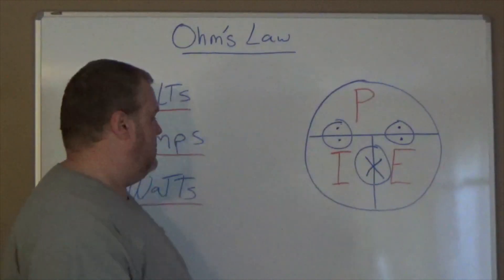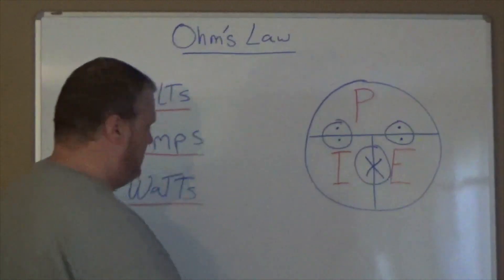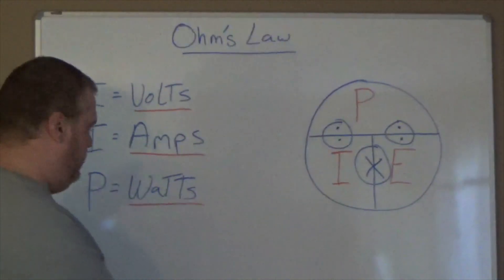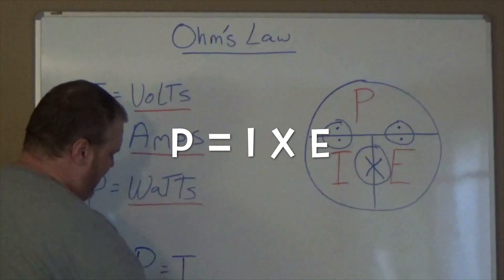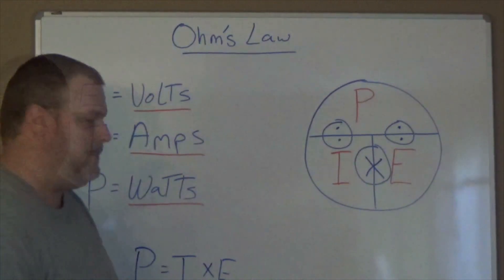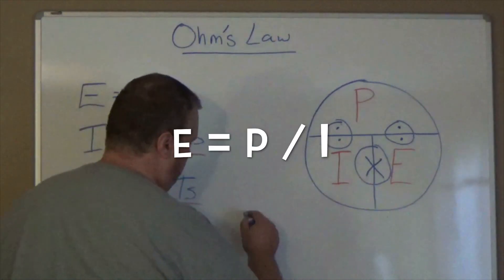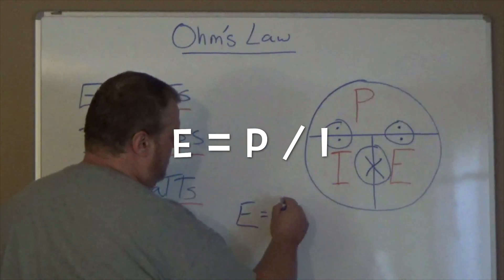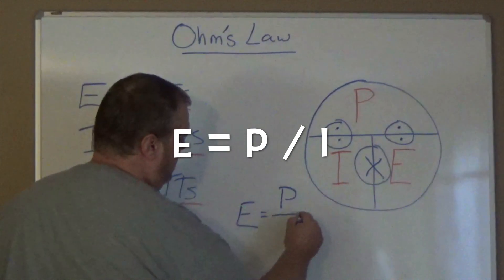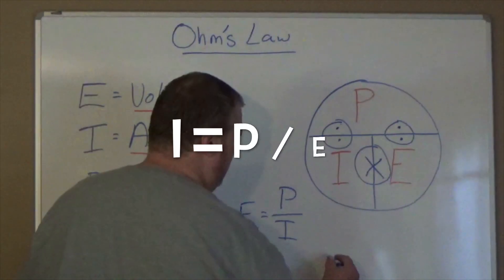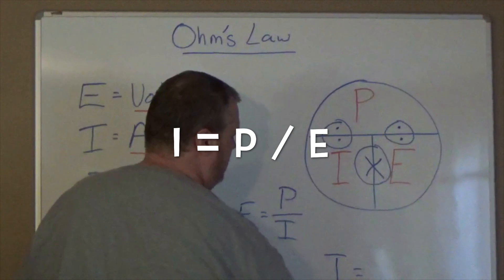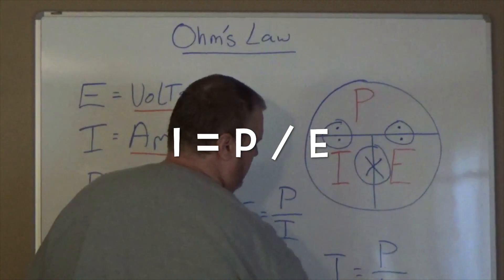Remember, this is the basics. If I want to figure this out, I can do a couple different things. I'm going to write some formulas up on the board for you to understand: P equals I times E, E equals P divided by I, and I equals P divided by E.